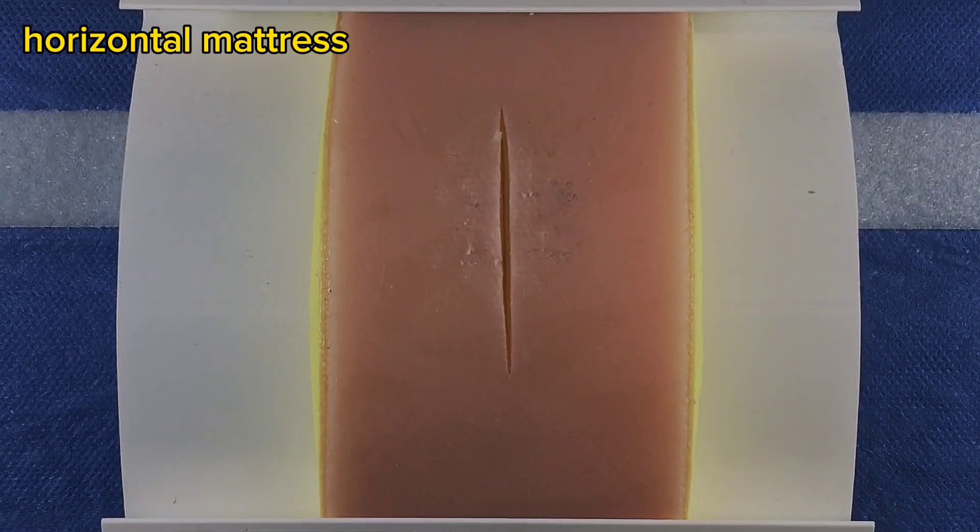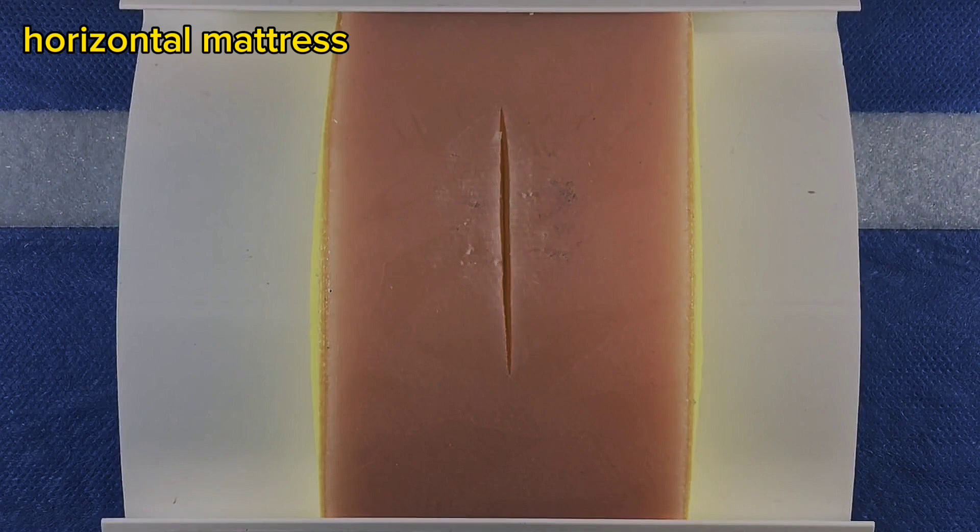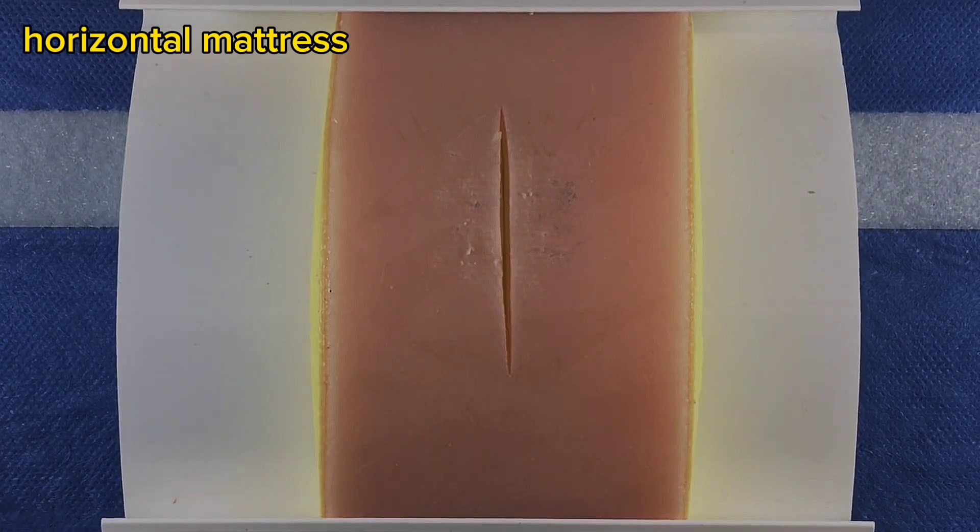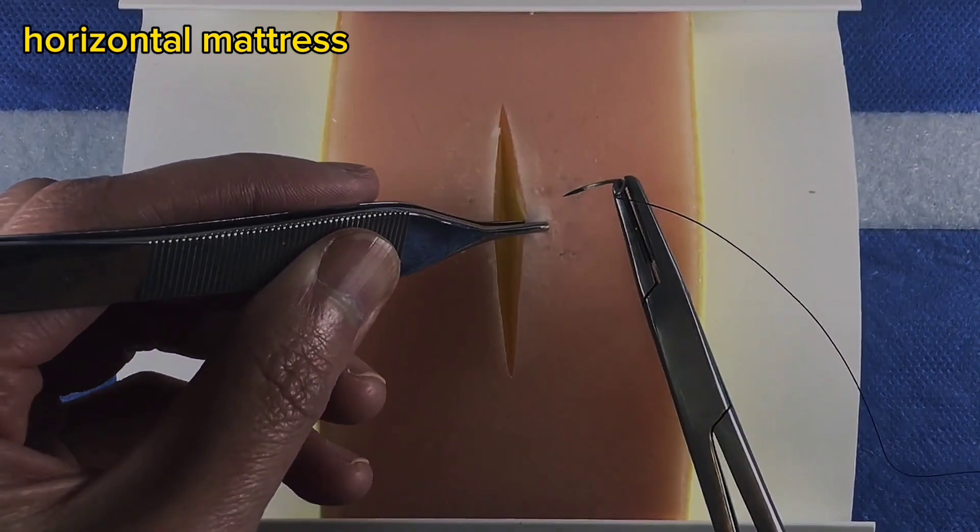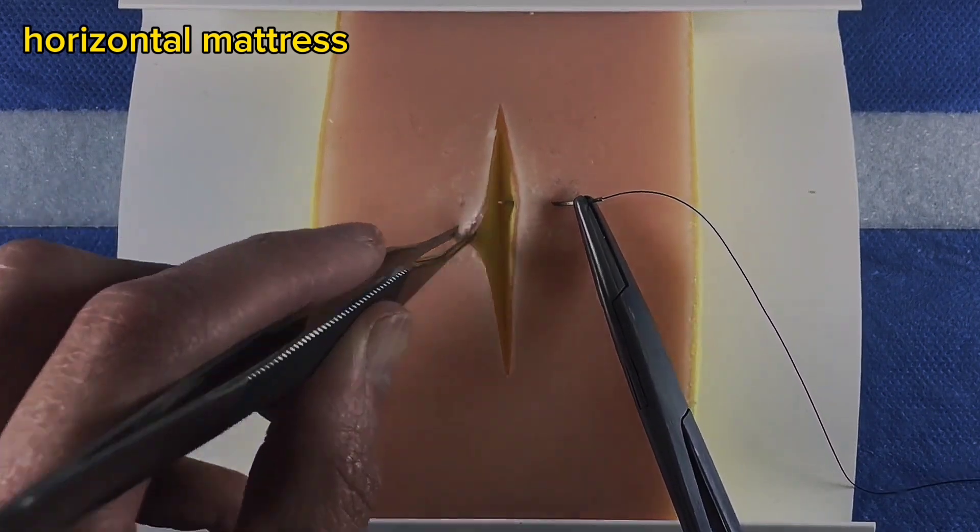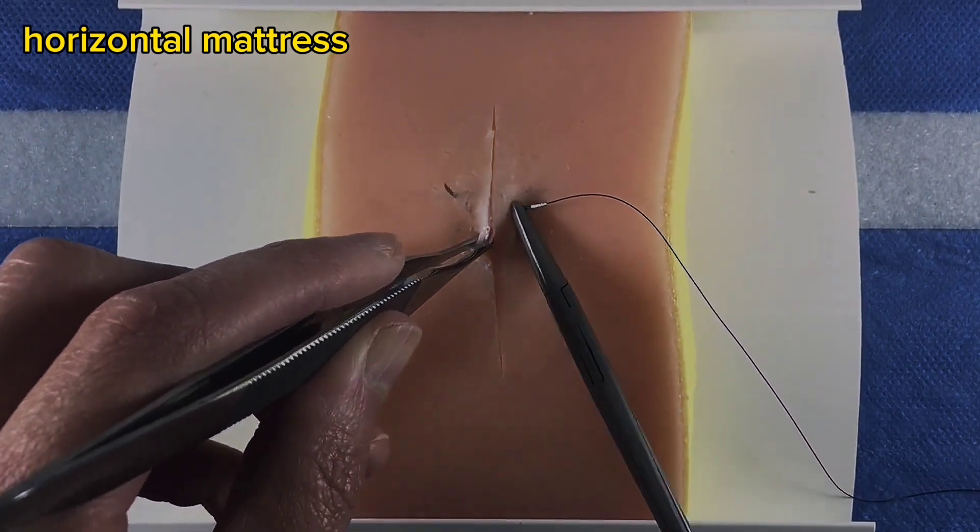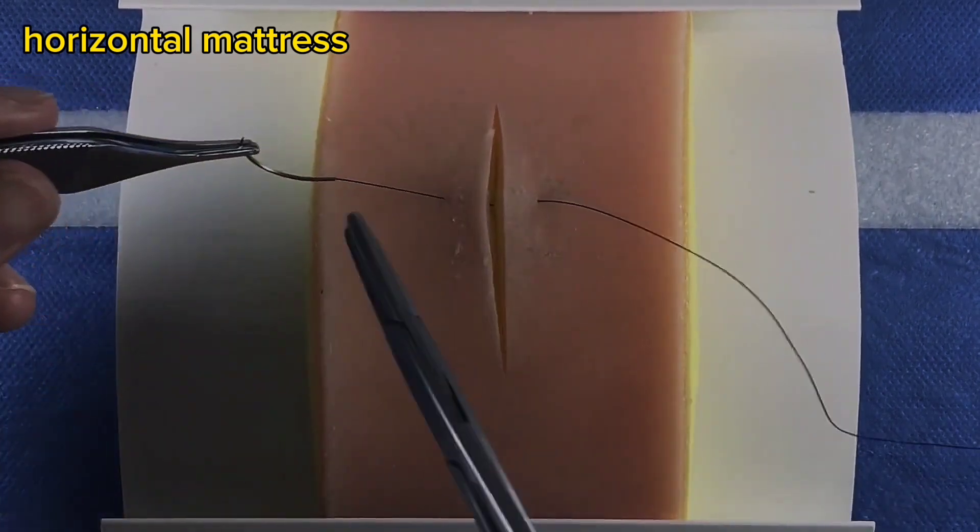A horizontal mattress is where two stitches are placed in the same horizontal plane next to one another. This is ideal for everting the wound edges to facilitate optimal healing. To perform a horizontal mattress stitch, drive the needle horizontally across the wound as you would a simple interrupted stitch.